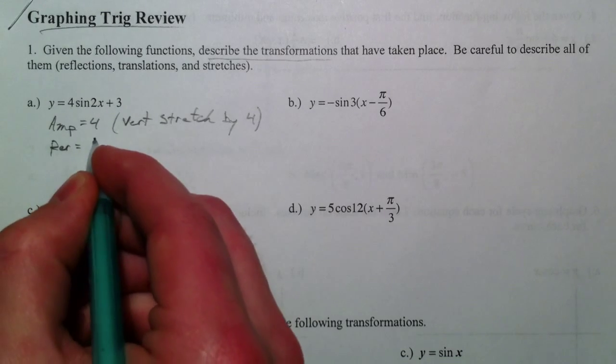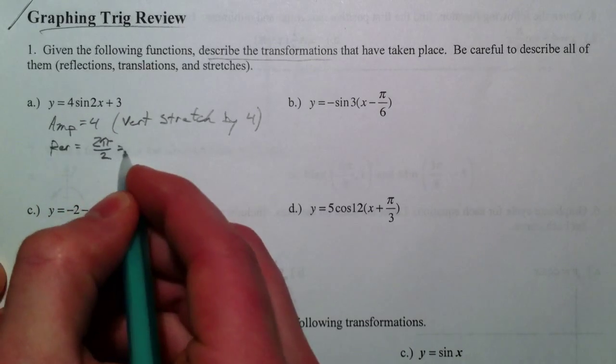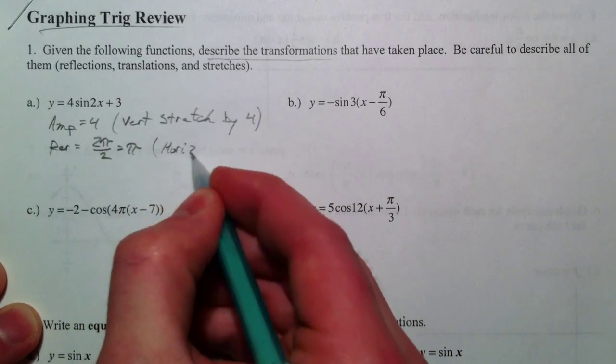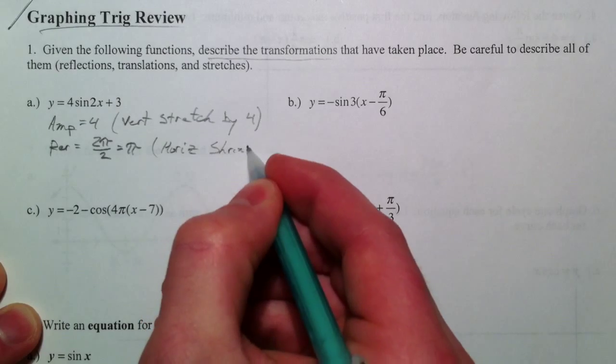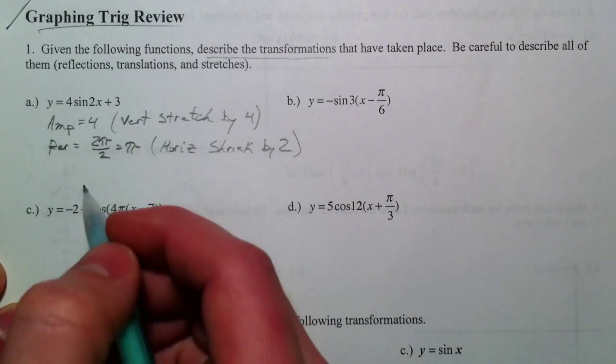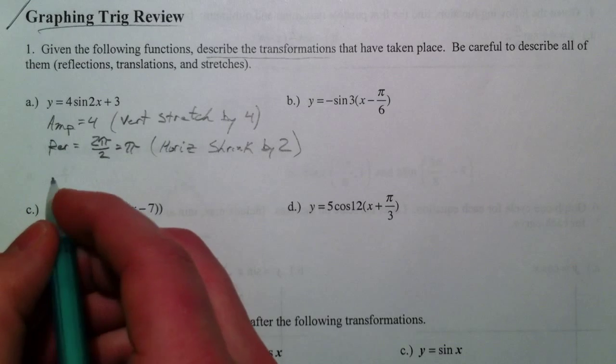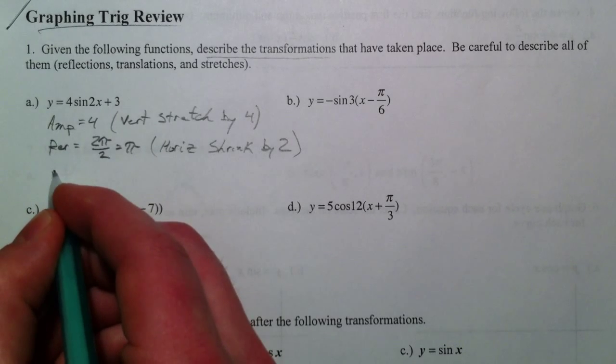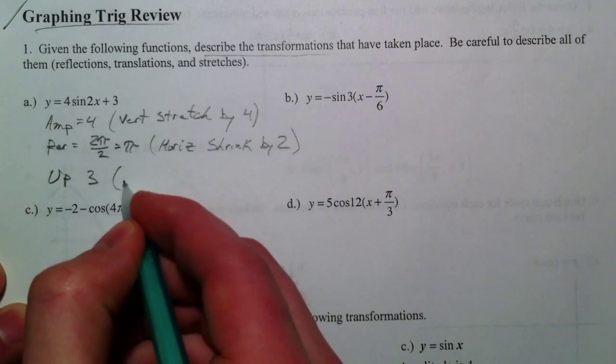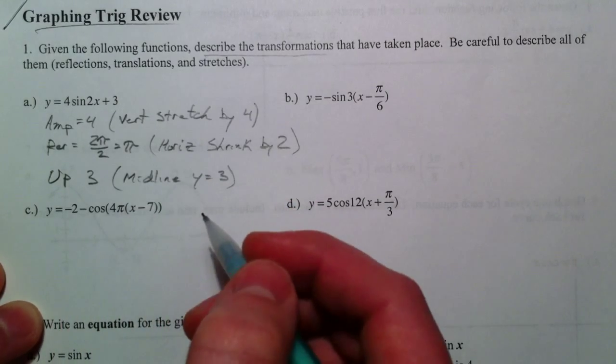So the period used to be 2 pi, but now it's 2 pi, and rather than being multiplied by 2, it's divided by 2. So that's a horizontal shrink by 2. And the plus 3 moves it up 3. And that's the midline.